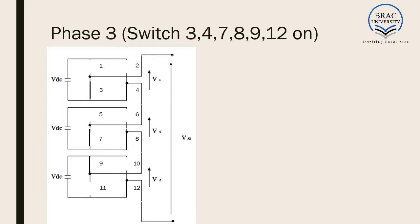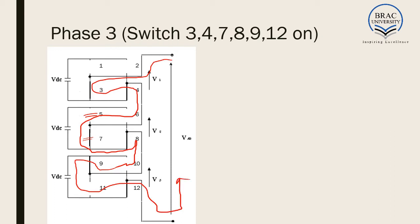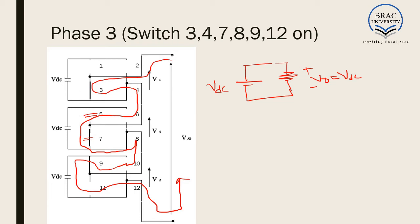In the third phase, the current flows similarly to the second phase. Only switch 5 is open and switch 7 is closed. In the path of the current, there is only one VDC involved, and that is connected to the output. So we get V output equal to VDC. At phase 1 we had 3VDC, phase 2 we had 2VDC, and now we have V output equal to VDC.